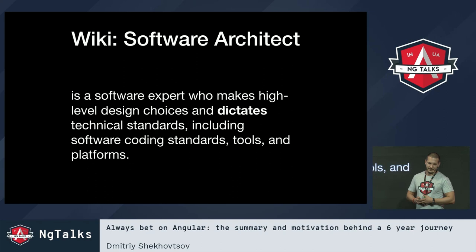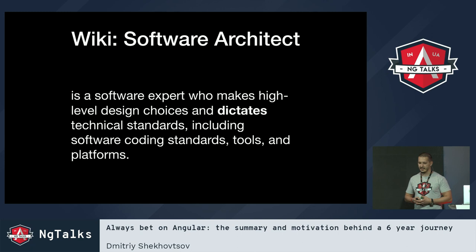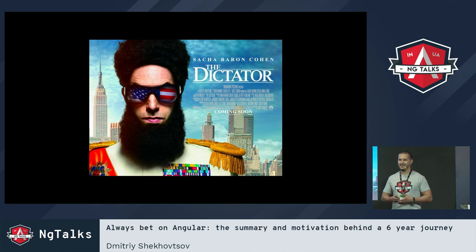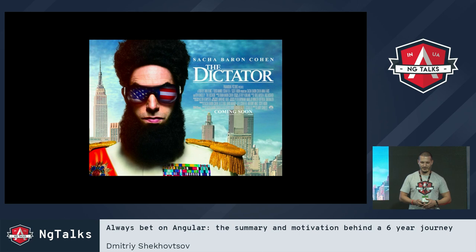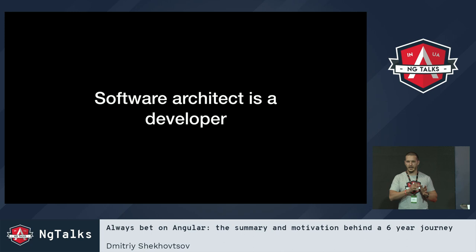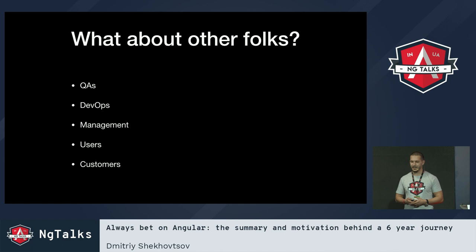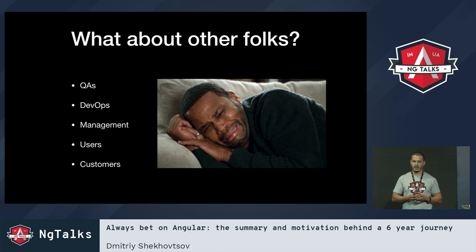According to Wikipedia, a software architect is an expert who makes high-level design choices and dictates technical standards, coding standards, tools, and platforms to use. I am a software architect — I can dictate the things I would love my team to use. But in this part, a software architect is a developer. When a developer becomes a really good expert, they become a software architect who decides the fate of the whole product. Why don't we take into account other folks on the team — QAs, DevOps, managers, users, customers — who paid money to develop their products? Why are we not keeping their opinion and their vision of how the product should behave and be developed?